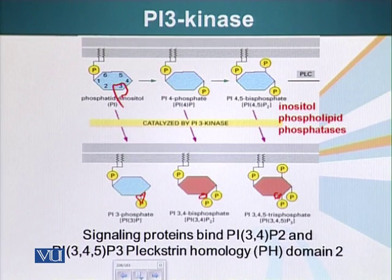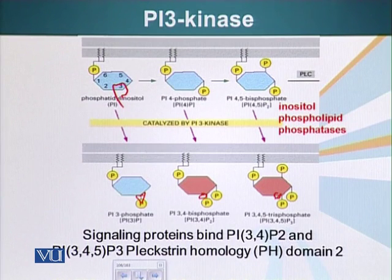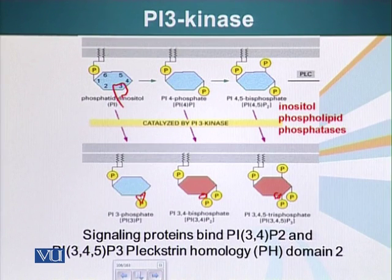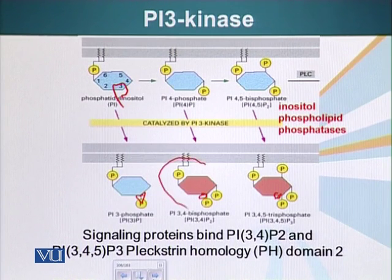These molecules can also be cleaved by PLC — phospholipase C. There are two different versions of that, which we will talk about later. These molecules can be cleaved to generate inositol triphosphate or bisphosphate and DAG. Inositol triphosphate can bind calcium channels on the membrane of the ER and release calcium ions. The influx of calcium can thereby activate other proteins. These structures also serve as scaffolds to which other proteins can bind and become activated.